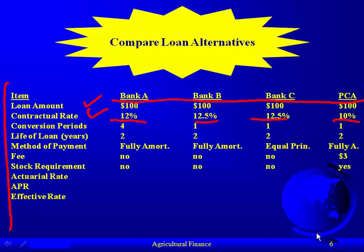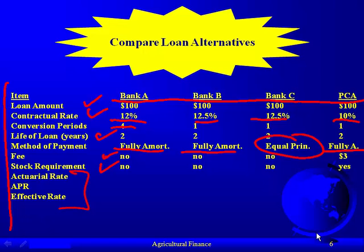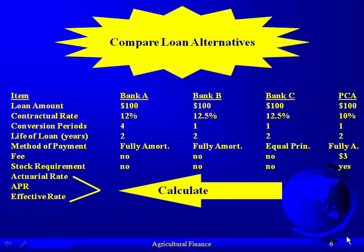The conversion period is one for all of them except Bank A, which is quarterly. The life of the loan is the same for all, and three of them have the standard fully amortized loan. Only the third bank has equal principal payments. Only the PCA has a fee and a stock requirement or compensating balance requirements. We're going to calculate the actuarial rate, then the APR, and then the effective rate — because one of these banks has different conversion periods per year than the other three, so the APR might give you the wrong answer.